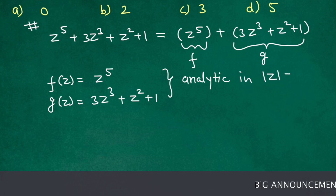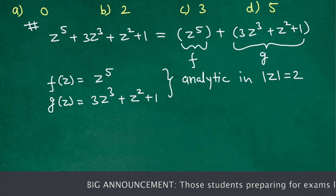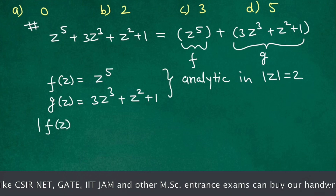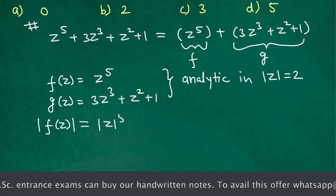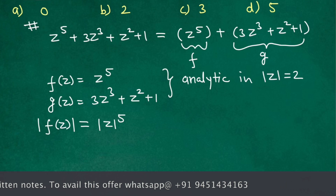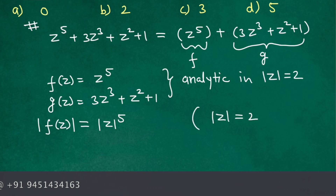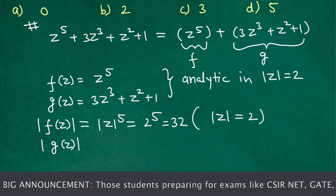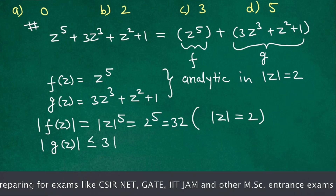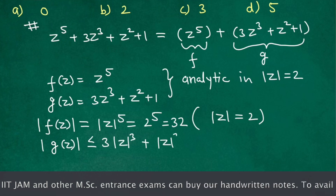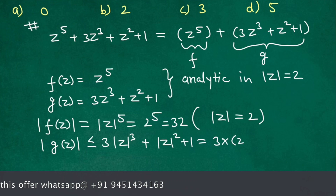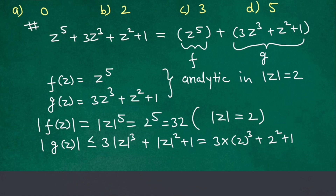Now let us check the third condition. The modulus of f(z) is the modulus of z⁵, which by properties of modulus equals |z|⁵. On the boundary of the circle |z| = 2, this equals 2⁵ = 32. Now for the modulus of g(z), by the triangle inequality this is less than or equal to 3|z|³ + |z|² + 1. On the boundary this gives 3(2³) + 2² + 1.